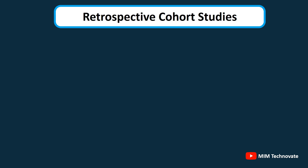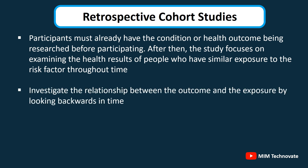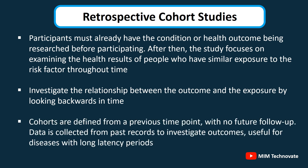Retrospective cohort studies: Participants must already have the condition or health outcome being researched before participating. The study then focuses on examining the health results of people who had similar exposure to the risk factor throughout time, investigating the relationship between the outcome and the exposure by looking backwards in time. Cohorts are defined from a previous time point with no future follow-up; data is collected from past records, useful for diseases with long latency periods.